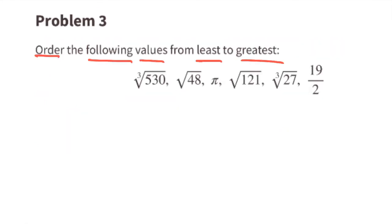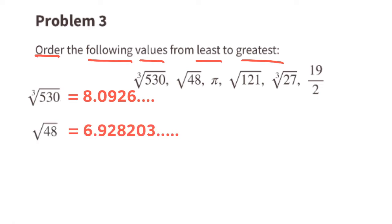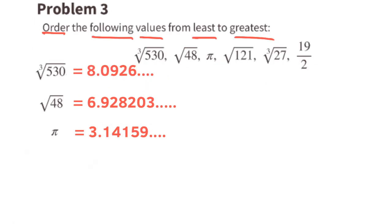Problem number three: order the following values from least to greatest. First let's find their values, then we can order them. The cube root of 530 is a little bit greater than 8. The square root of 48 is a little bit less than 7. The value of pi is a little bit greater than 3, and the square root of 121 is 11.